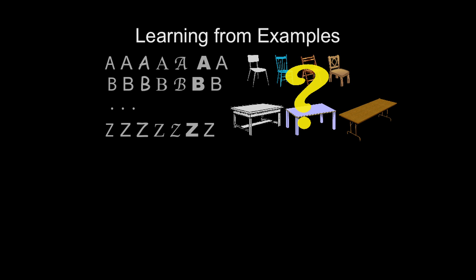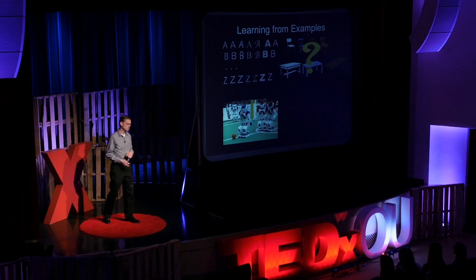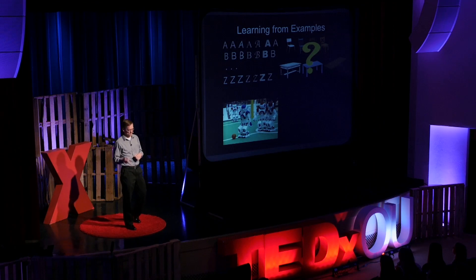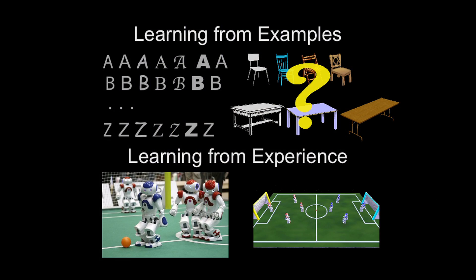Could you use this same algorithm for recognizing chairs instead of tables? Maybe, but maybe not — the three-dimensional nature of chairs and tables makes them different enough from letters that the algorithm might not work. Could you use it for something as conceptually different as having robots play soccer? Probably not. So if you're going to have robots play soccer, you need a different type of machine learning — one where they learn from experience, trying out lots of different plays and seeing what works, probably in simulation to make it run more quickly.